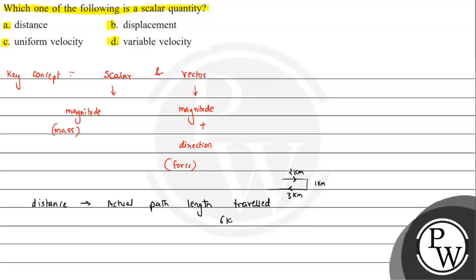Since direction is not of importance for distance, it is a scalar quantity. So option A should be the answer. Now if we talk about displacement, displacement is basically the shortest distance between the initial and the final point.